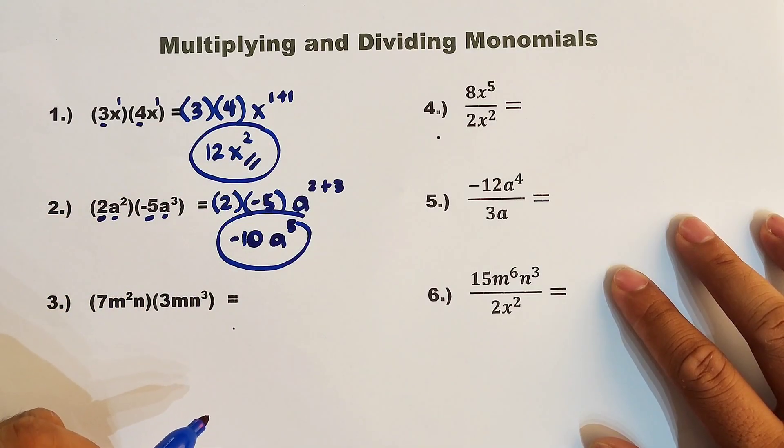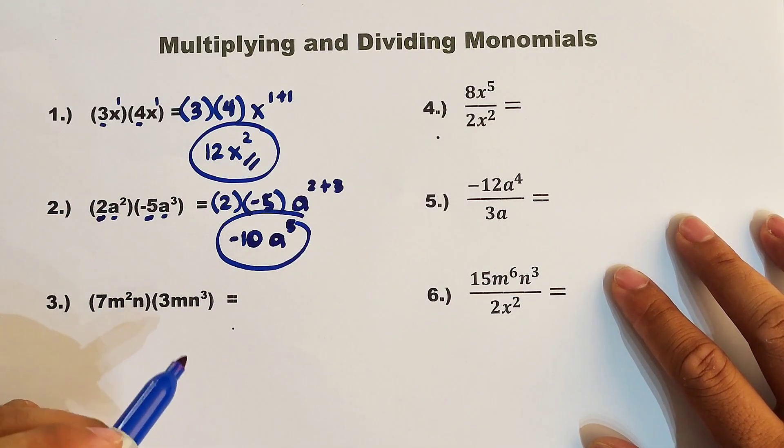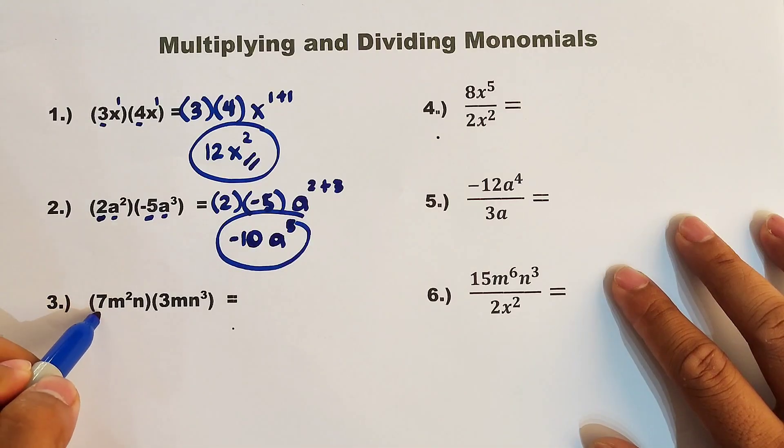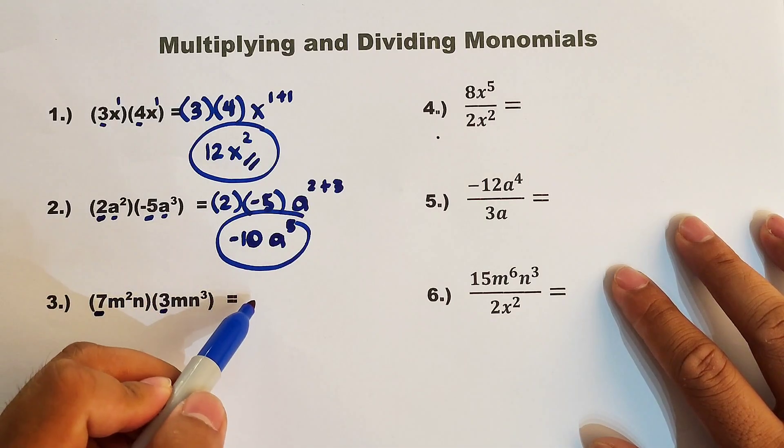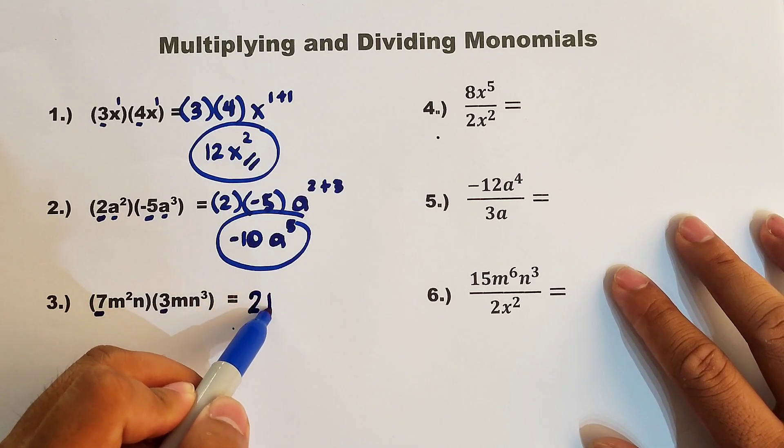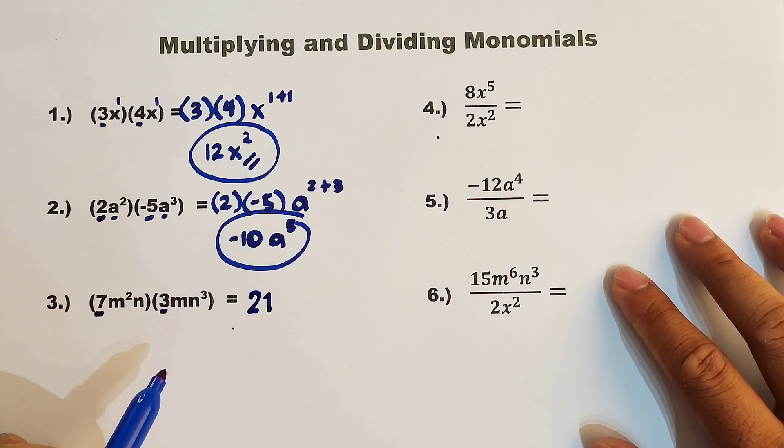Now let's move on with item number 3. Number 3, I have given you here 2 polynomials with 2 variables. So let's start with the numbers. 7 times 3, that would be equal to 21. Now, for the variables, we have 2 variables.